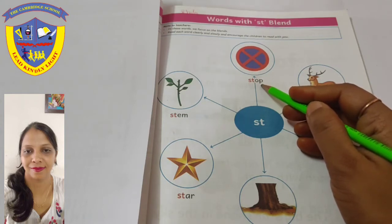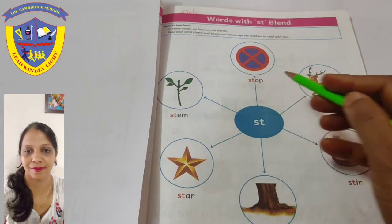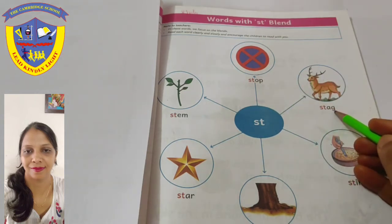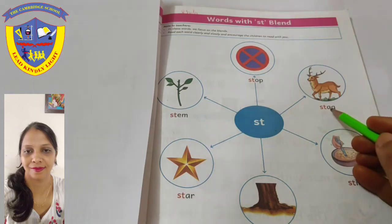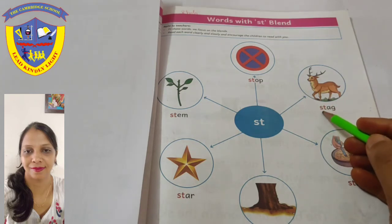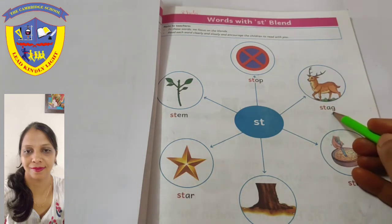Next is: St, Ag — Stag. Stag means a male deer. Stag means a male deer — Heeran.